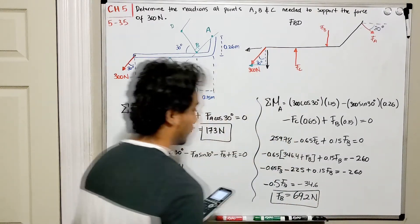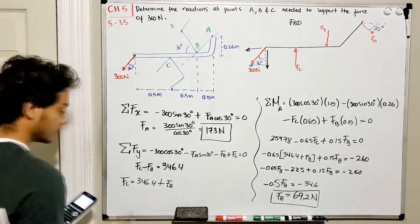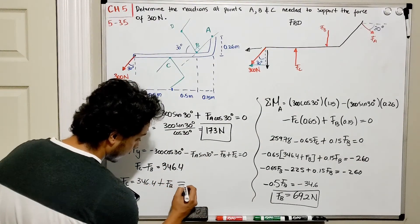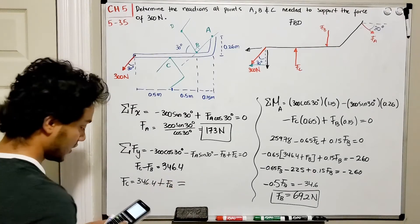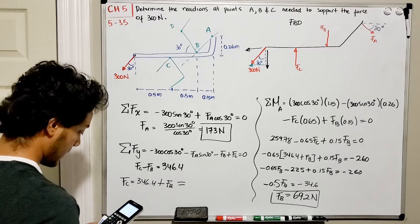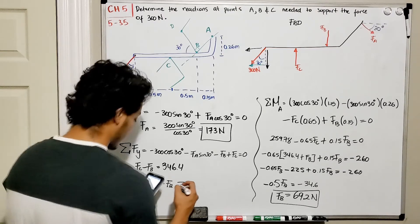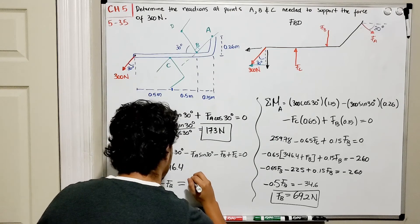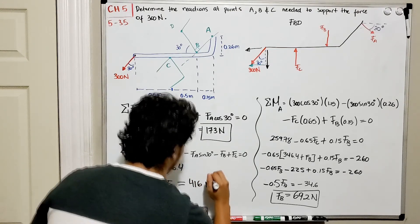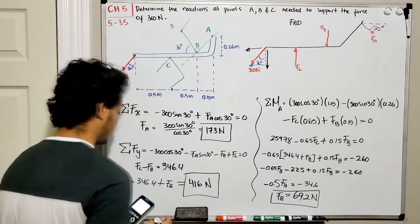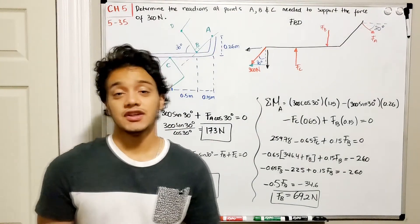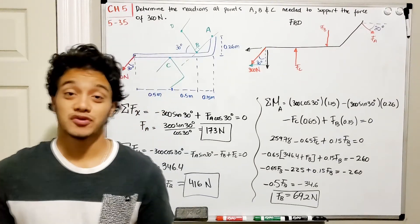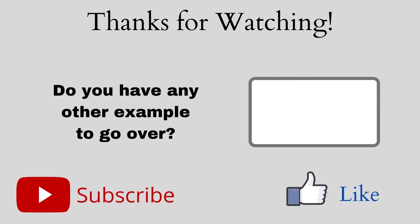So we found FA = 173 N and FB = 69.2 N. All we need now is FC. Since we know FB, we use FC = 346.4 plus 69.2, which gives FC = 416 N approximately. Thank you guys for watching. If you have any questions or comments, please post them down below and I'll see you in the next video.